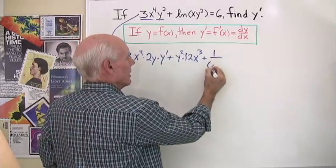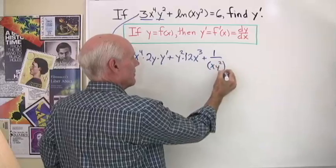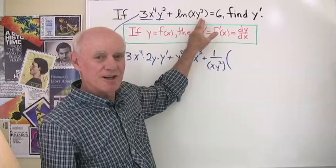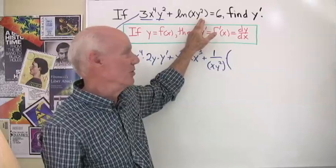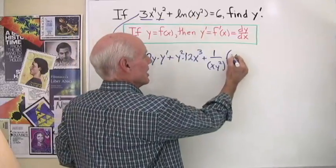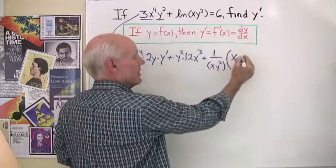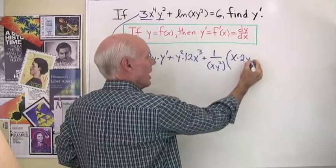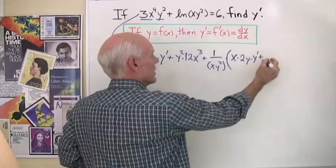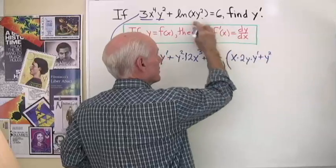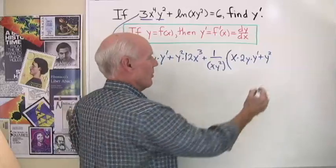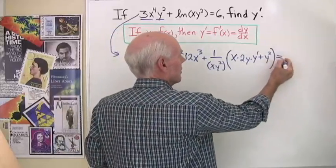So I have 1 over xy squared times the derivative of xy squared, and again that looks like the product rule. So I have the first, x, times the derivative of the second, 2y times y prime, plus the second, y squared, times the derivative of the first. When I differentiate x with respect to x I get 1.